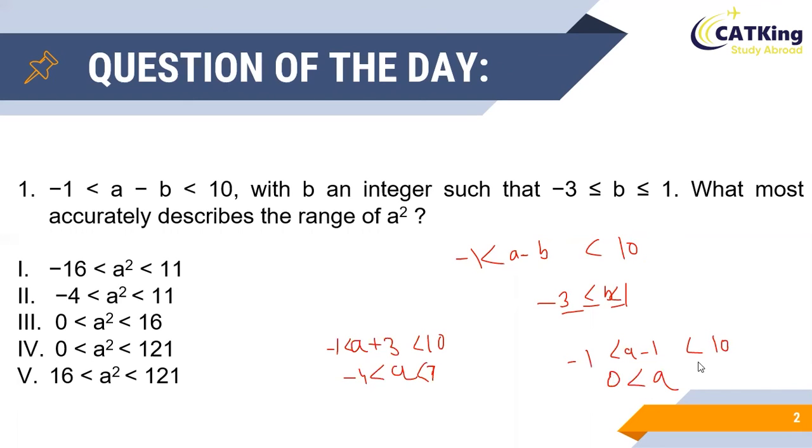Thus on combining the two obtained inequalities, we see that a takes values between minus 4 and 11. Now we see that a can take negative values as well, but in that case also a square will always be greater than 0. Hence the lower value of a square is always 0, and we know that a is always less than 11, thus giving us option 4 as the correct answer.